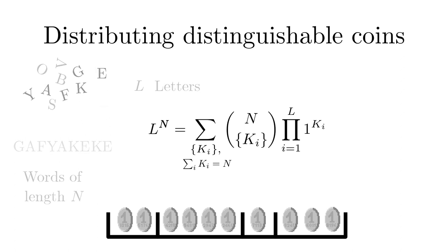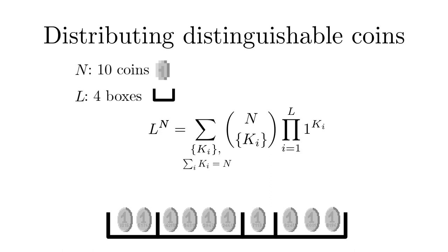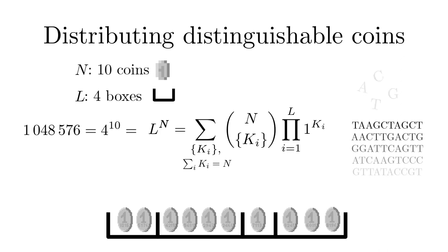In the adventure the task was to distribute 10 silver coins into four boxes. Thanks to the trick we don't have to evaluate and sum over the two hundred and eighty six multinomial coefficients but instead obtain directly the result four to the power 10 resulting approximately in one million possible configurations. This is equal to the number of 10 character words using only four letters. Or the number of gene sequences with 10 base pairs.